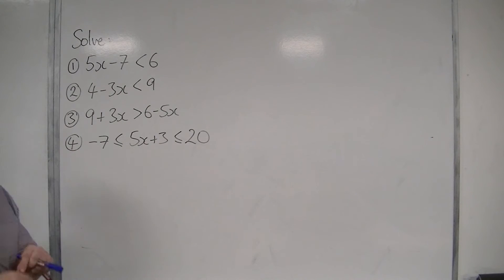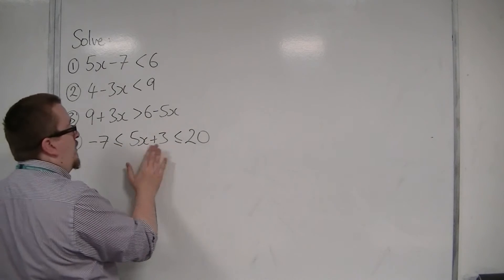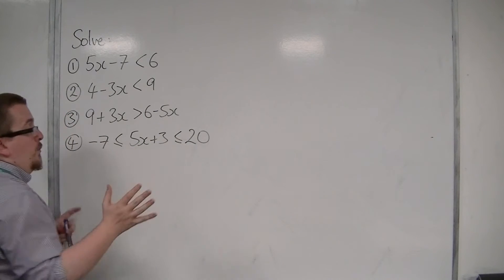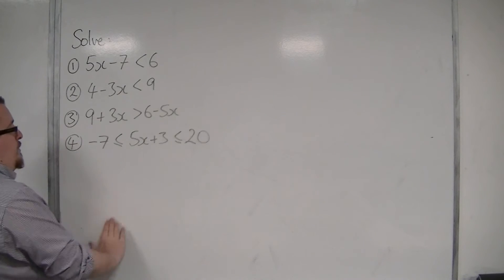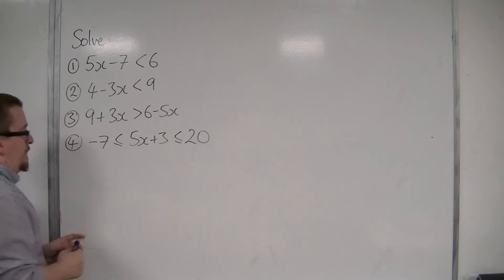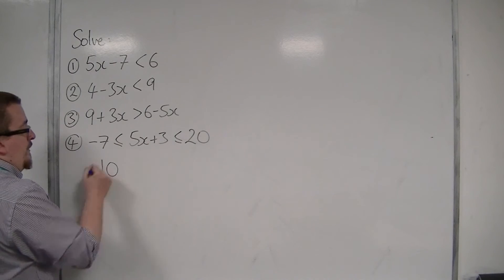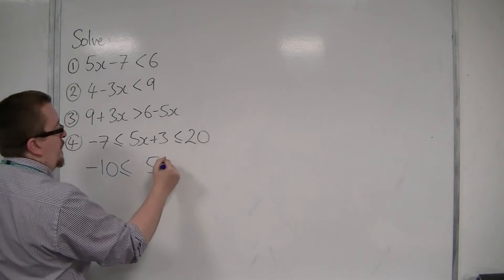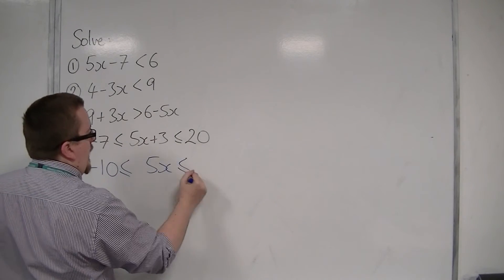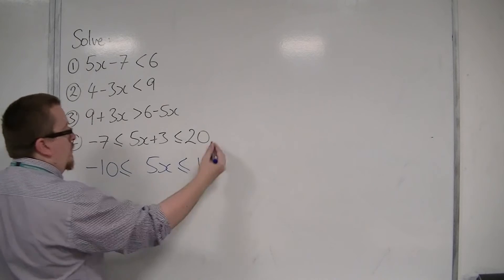So if I take 3 from both sides, as I would in an equation, I take 3 from all three sides. So subtracting by 3, I'm going to have minus 10 on the left. I'm going to have 5x in the middle. And I'm going to have 17 on the right.